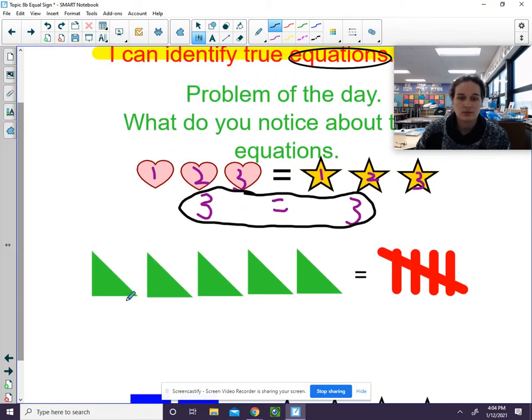Let's take a look at this one here. Let's count how many are on each side. So we have one, two, three, four, five. And here we have five tallies. So does five equal five? Is five the same as five? It is.